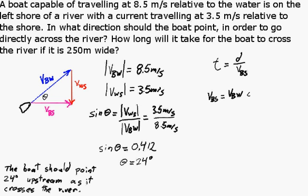So the velocity of the boat relative to the shore is going to be the velocity of the boat relative to the water times cos theta. We can see that in that diagram. So it's going to be 8.5 meters per second times cos of 24 degrees, so the velocity of the boat relative to the shore will be 7.75 meters per second.